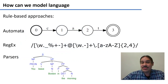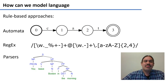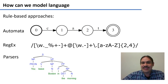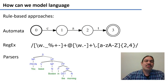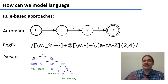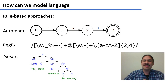In rule-based approaches, we're going to study structures like automata and finite state machines. We're going to study regular expressions — for example, this regular expression finds email addresses in text. We're going to study parsing rules and how computers can understand the structure of a human sentence.